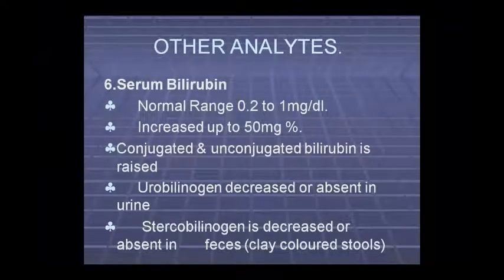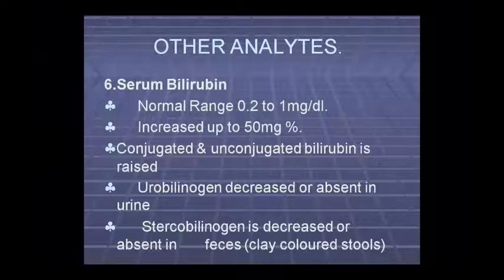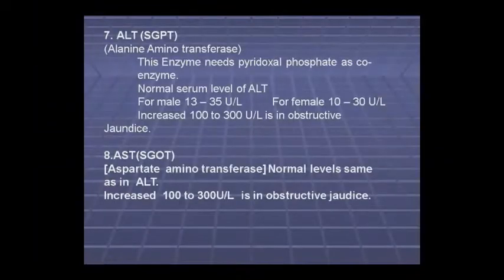Looking at serum bilirubin levels: the normal value is around 0.27 mg; it increases to 1–2 mg in obstructive jaundice. Both conjugated and unconjugated bilirubin are increased. Urobilinogen is less or absent in urine, and stercobilinogen is less or absent in feces. Clay-colored stool will be passed in this case.